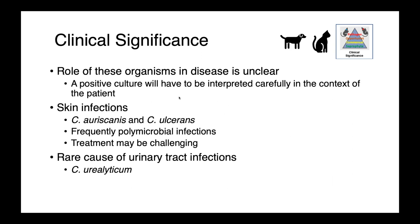In companion animals, the role of Corynebacteria in disease is unclear, and a positive culture really needs to be interpreted in the context of the patient. Skin infections caused by Corynebacterium auriscanis and Corynebacterium ulcerans have been reported, but these are frequently polymicrobial infections, so it's unclear which organisms are necessarily causing the pathology. Treatment can be quite challenging, so consultation with a dermatologist may be useful. Rarely, we also see urinary tract infections in companion animals caused by Corynebacterium urealyticum.